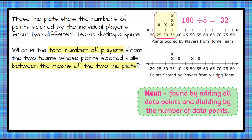Now let's look at the visiting team. We're going to add up all of these data points. Again there are five data points, so we're going to do 35 plus 35 plus 40 plus 50 plus 55, and that has a sum of 215. We're going to divide by five because there are five data points, so 215 divided by 5 is equal to 43. So the average number of points scored per player on the visiting team was 43.